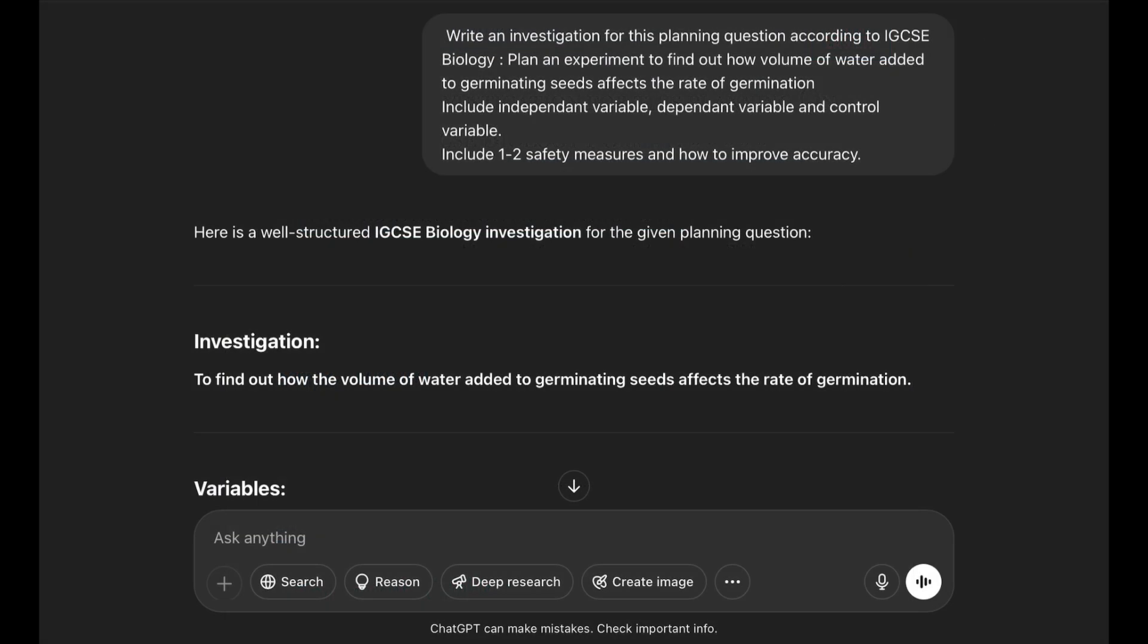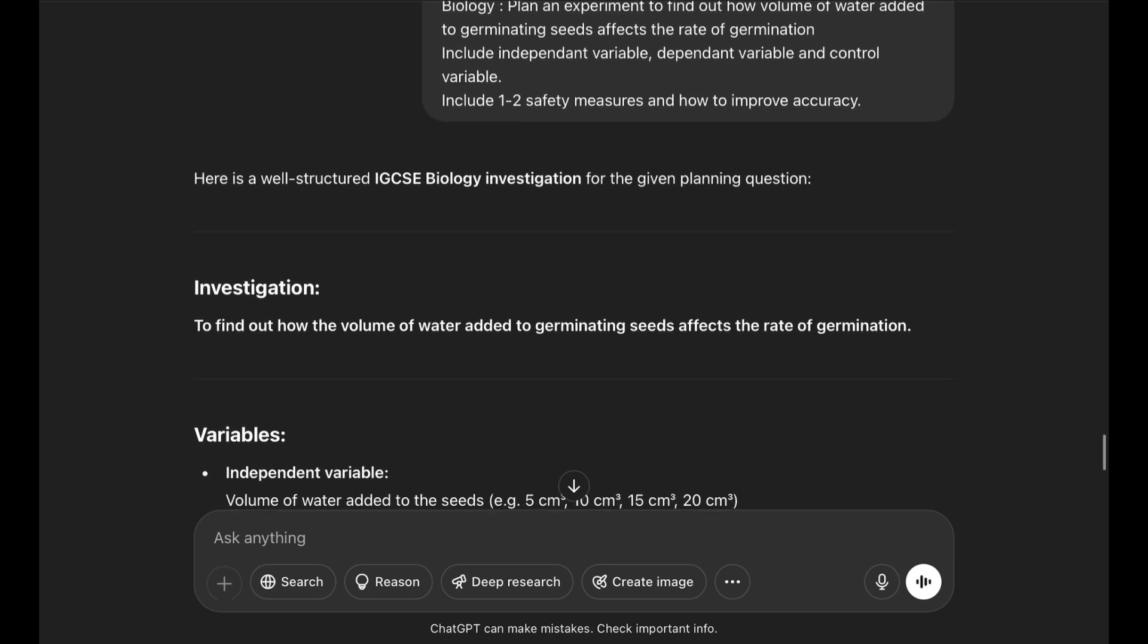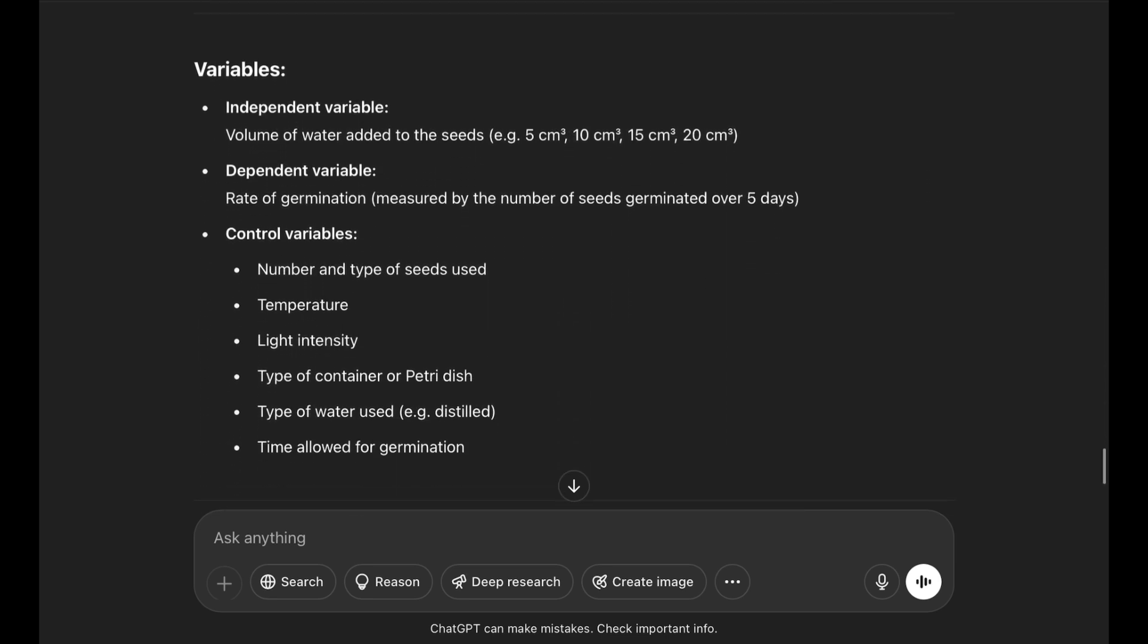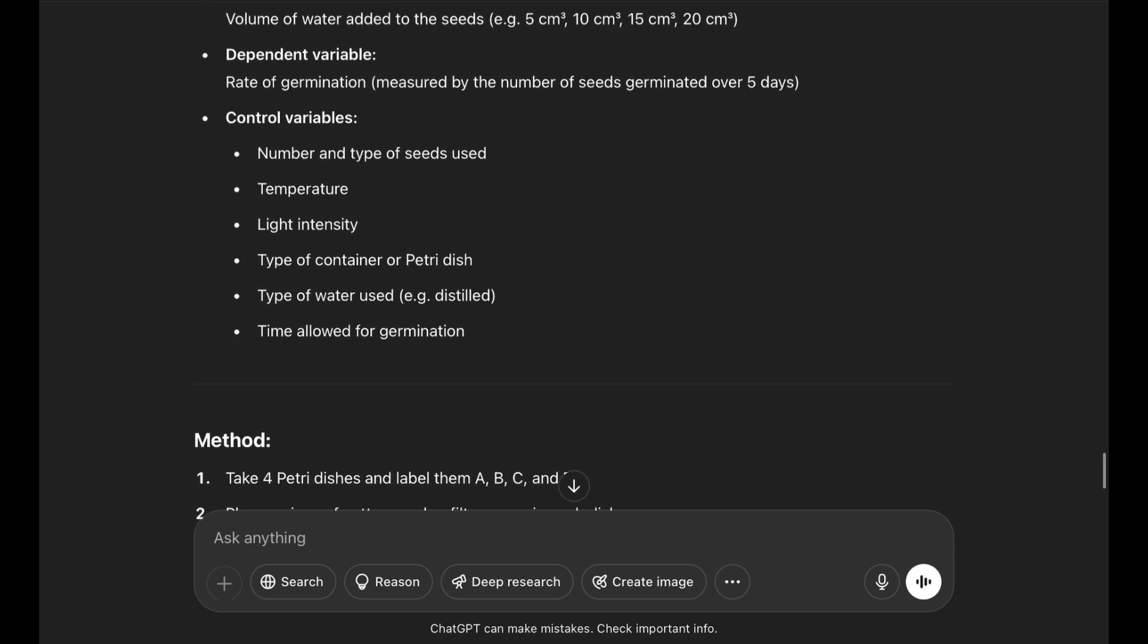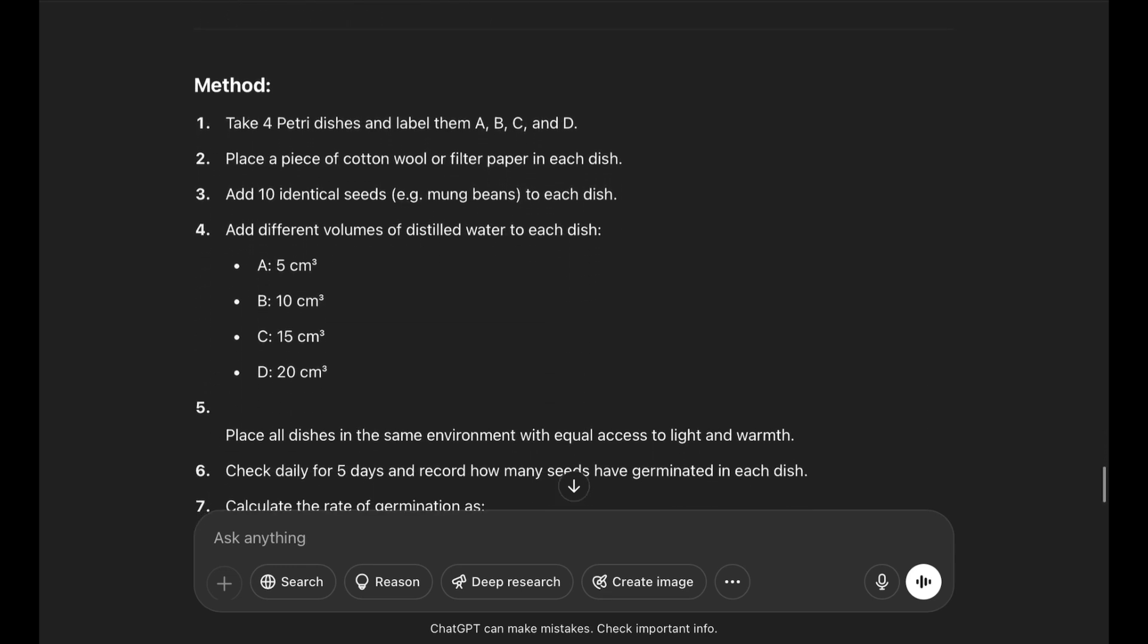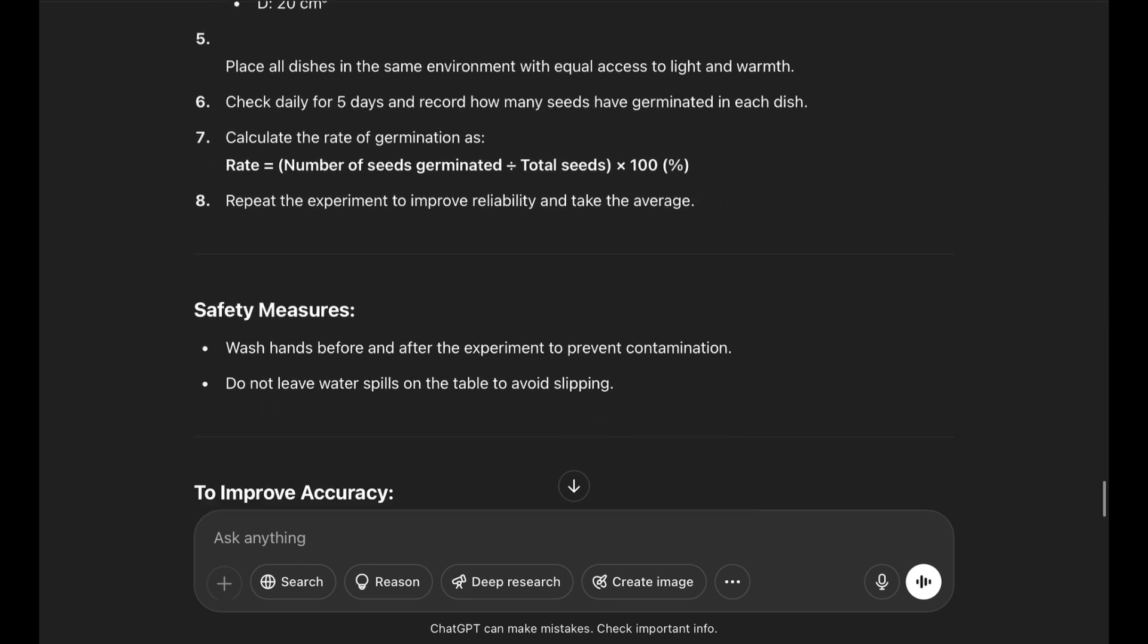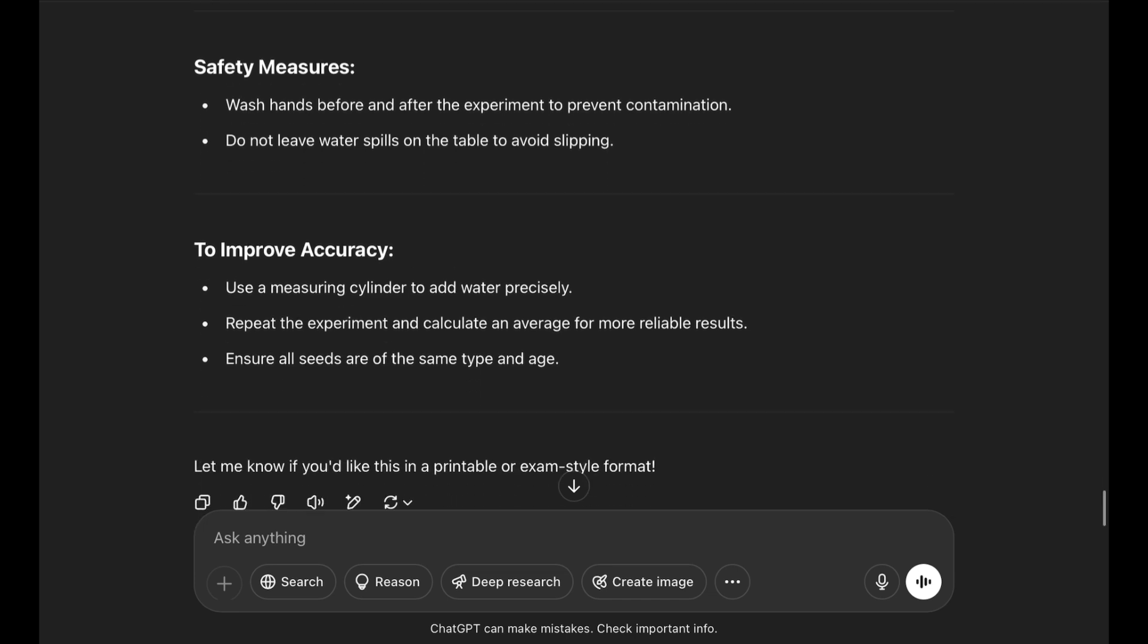Here I added the prompt on ChatGPT. I added the question as well, and this is the response that I got. It did identify the independent, dependent, and control variables. Then we have a method as well, and finally we got safety measures and some ways to improve accuracy.